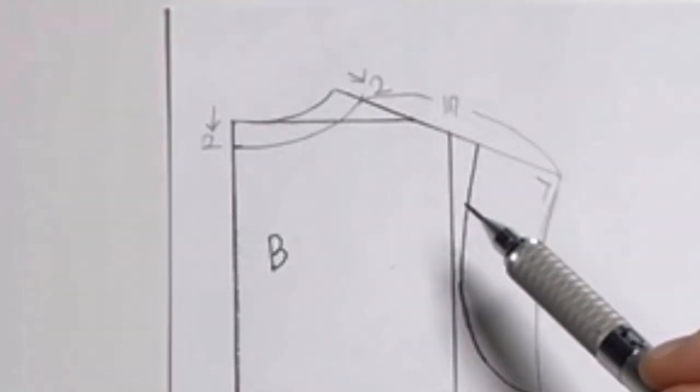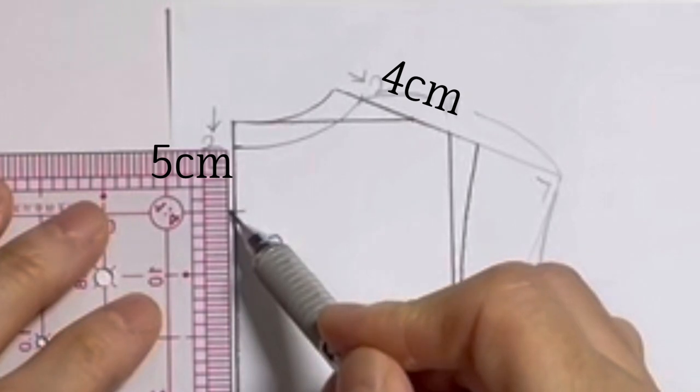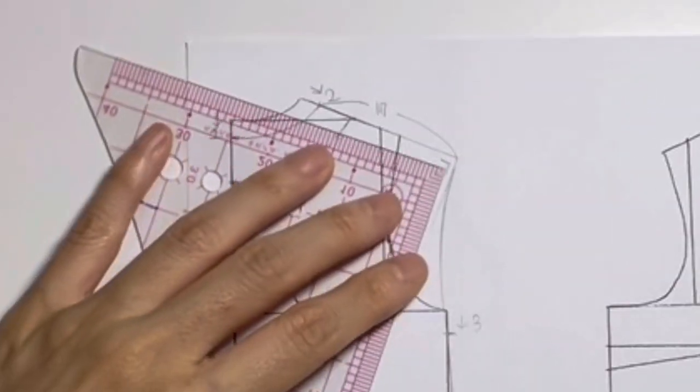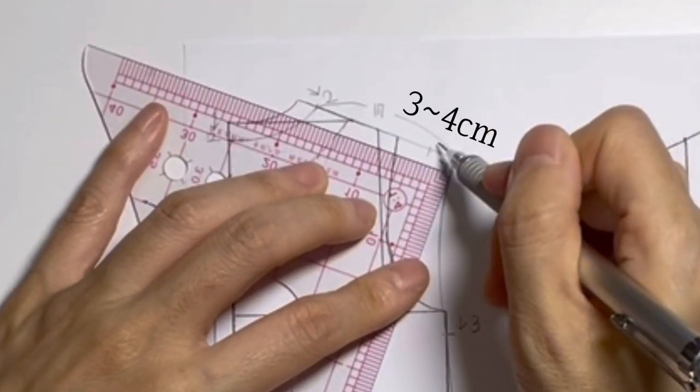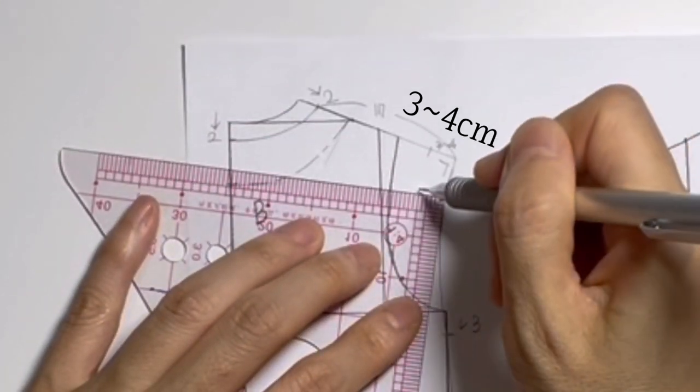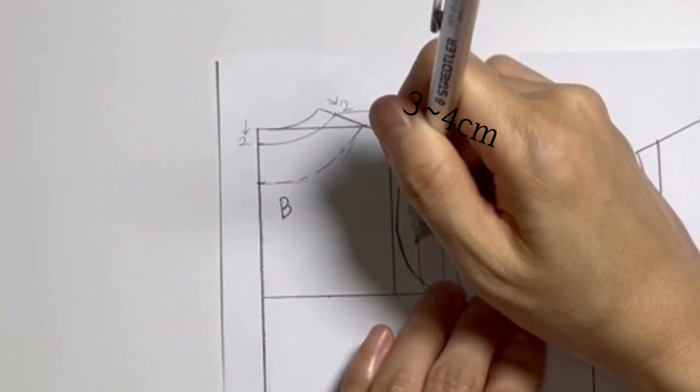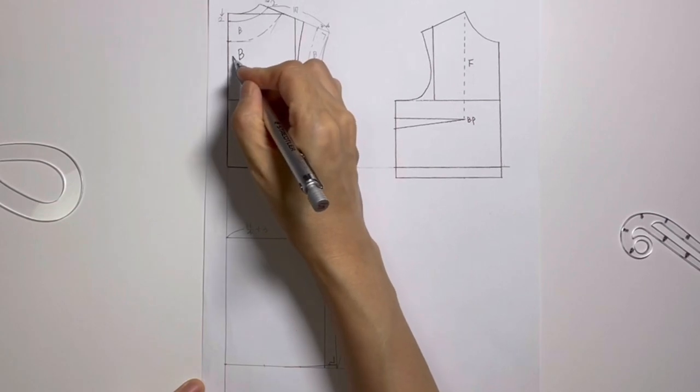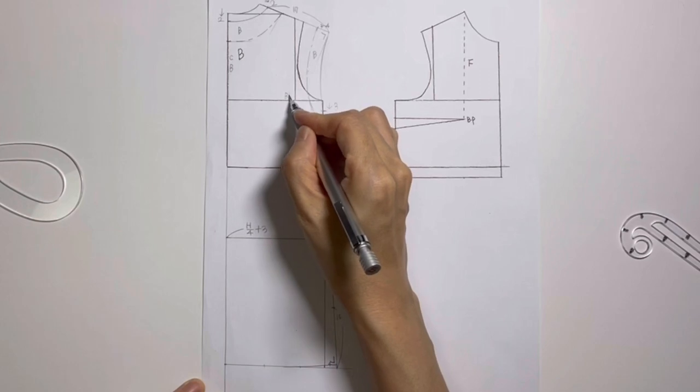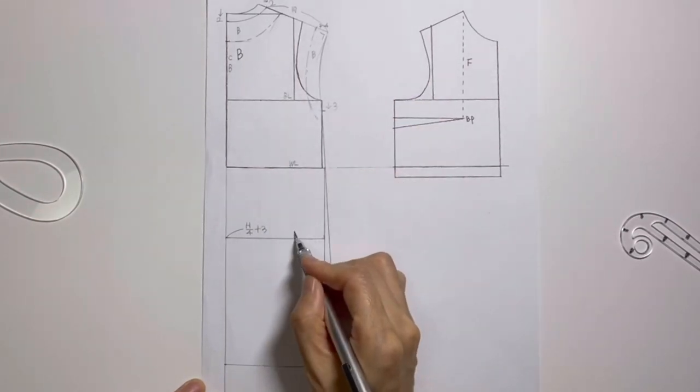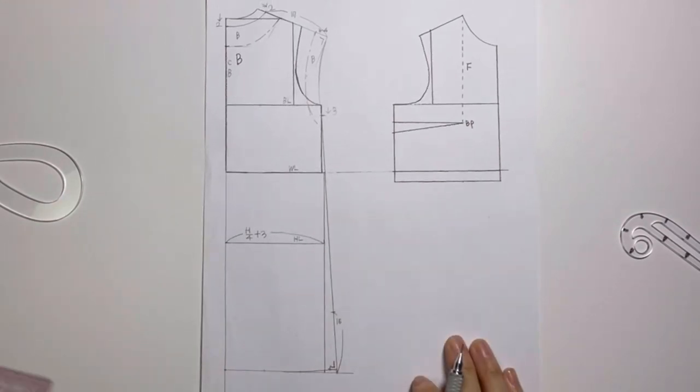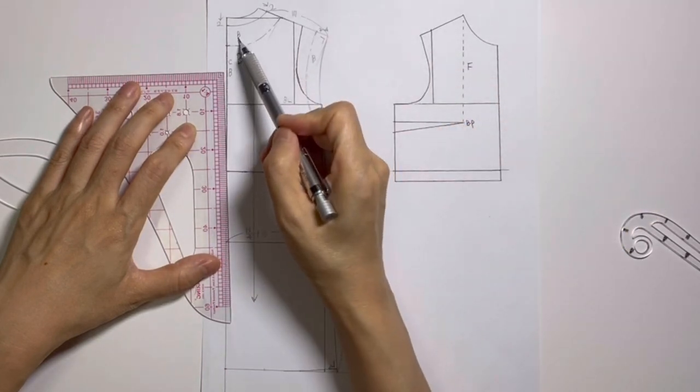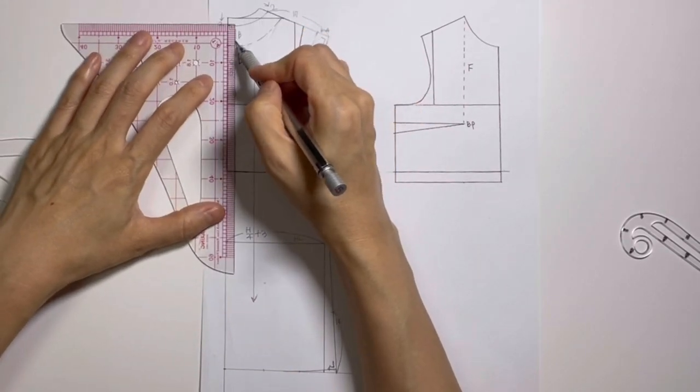Divide the hem into three equal parts and connect this point with the side seam about 1cm up. Draw the facing now. Back center 5, shoulder 4, long and short alternating pattern. The sleeve facing is 3cm, 3 to 4cm width. Mark the grain lines: center back CB, bust line BL, waist line WL, hip length HL. Also mark the facing with grain lines.